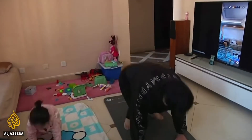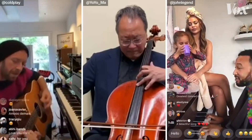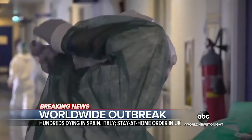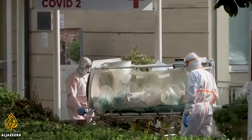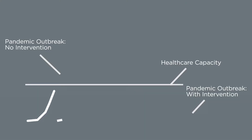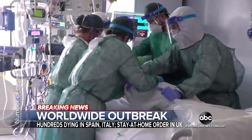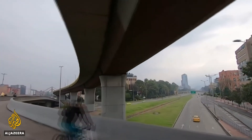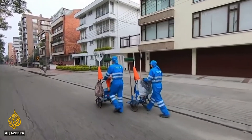The more social distancing and isolation of both ill and healthy individuals, the fewer cases and smaller chance of overwhelming the health care system. Suppression policies are predicted to drastically flatten the curve and result in the lowest impact on the health care system, lowest mortality rate, and quickest return to pre-pandemic levels.